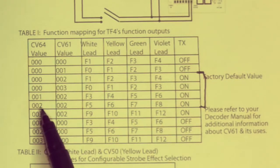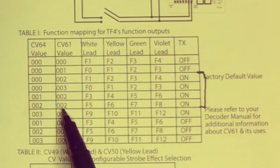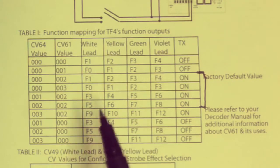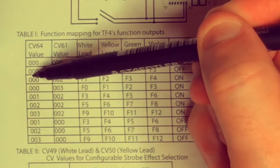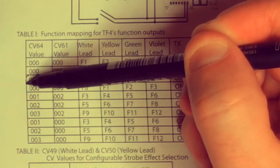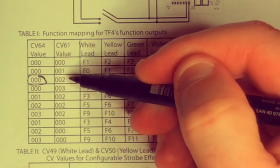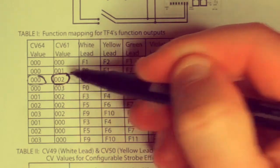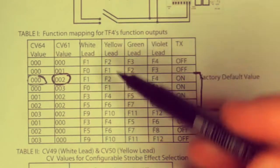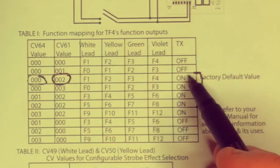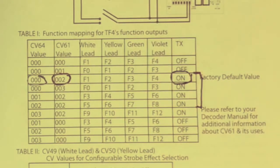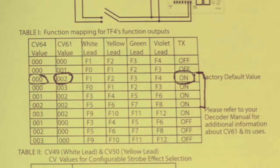If you don't use them for anything else in your locos, it might make sense for you to use a combination of 002 for CV64 and 002 for CV61. I'm going to go with my 000 on CV64 and my 002 on CV61. That means I'll end up with F1, F2, F3, F4, and transponding. Let's go ahead and set those up.